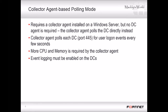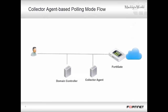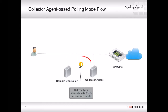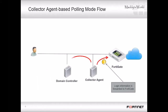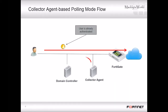Instead, the collector agent contacts the DC and gets its information directly. In the agent-based polling mode example, here again is a DC, a collector agent, and FortiGate — but the DC doesn't have an agent installed. The collector agent is constantly polling the DC to ask if there are any new login events. If any user has logged in since the last poll, the DC replies with that information. Finally, the collector agent sends the login information to FortiGate, just as in DC agent mode. When user traffic arrives at FortiGate, it already knows who is at that IP address and no repeated authentication is required.